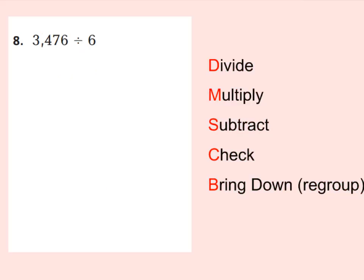Let's go ahead and take a look at number 8. It says 3,476 divided by 6. Let's go ahead and rewrite that so we can set it up to show our division work: 3,476 divided by 6. Now remember, you have 6 groups and you have 3 thousands. Can you give those 3 thousands to 6 different groups? No, you can't. So you're going to have to look at your hundreds — you want to start your quotient right above the 4. Go ahead, show your work, pause the video, and we'll check it together.